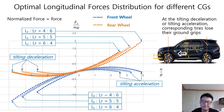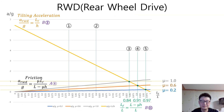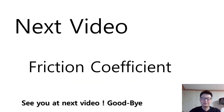If you watched the previous videos, you can easily understand this video. You can find the explanation on the variation of optimal longitudinal forces distribution for different CGs. I explained the optimal longitudinal front-rear acceleration and braking force distribution together with the constant friction lines, and how to obtain the maximum acceleration value using CG location data. The topic of the next video will be friction coefficient. See you in the next video. Goodbye, guys.